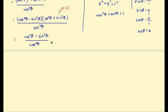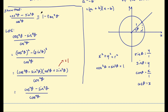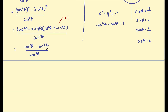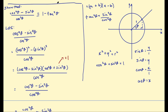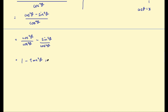Look back at the original identity to see what you need to end up with — 1 minus tan squared theta. Tan squared theta can be written as sine squared theta over cosine squared theta. If I split the numerator into two fractions, I get cosine squared theta over cosine squared theta, minus sine squared theta over cosine squared theta. That equals 1 minus tan squared theta, which is the right-hand side. We've shown that identity is true.